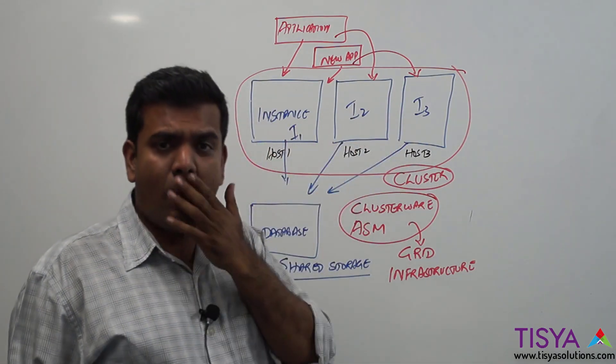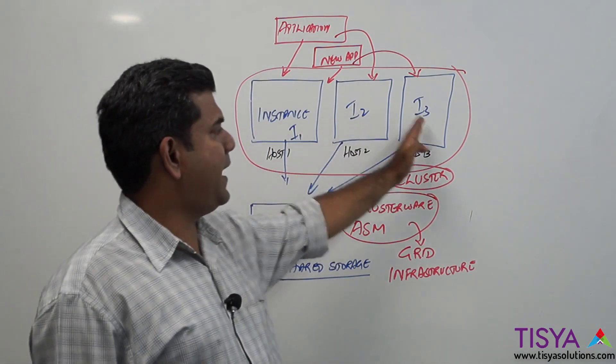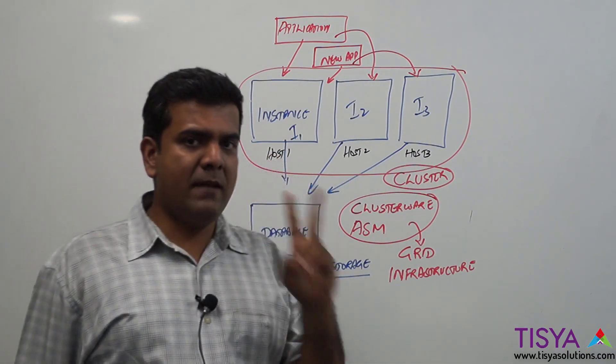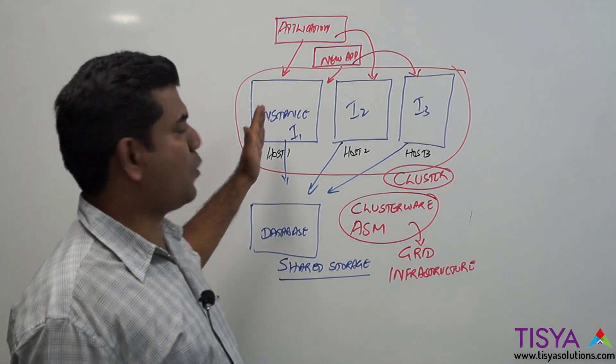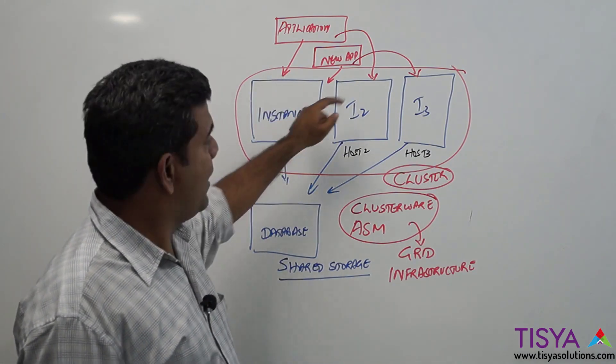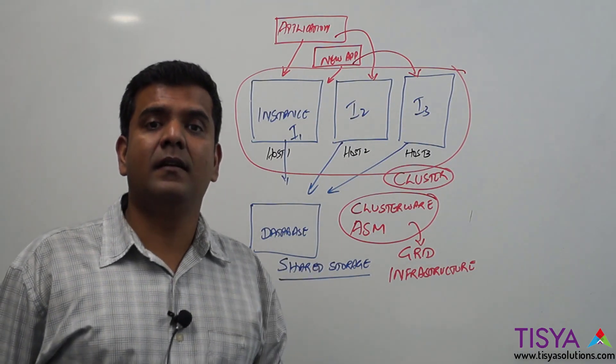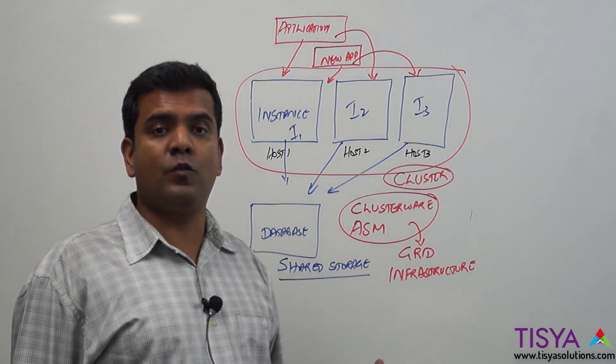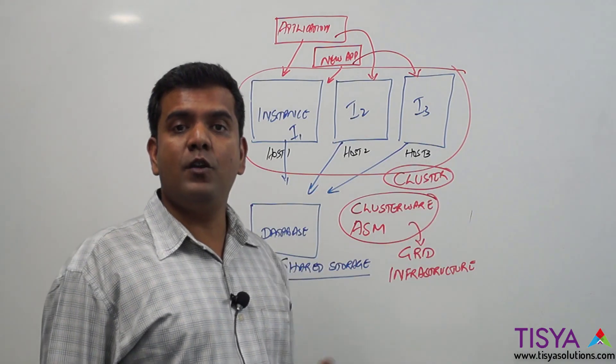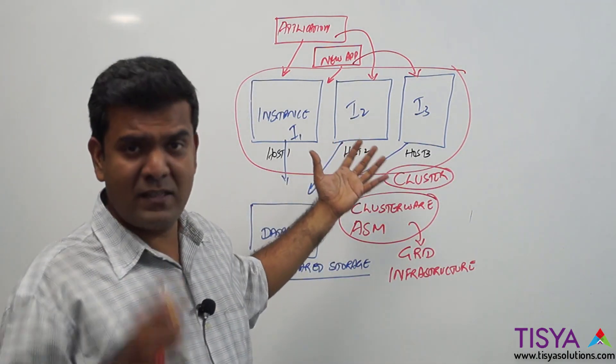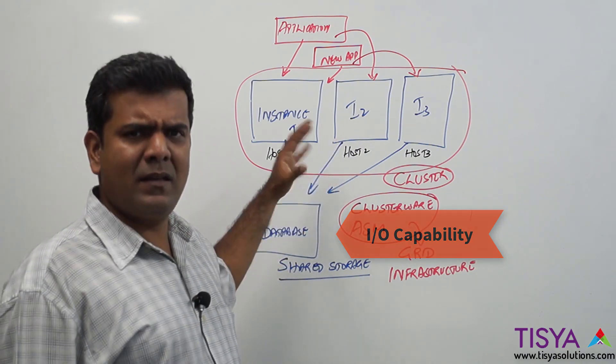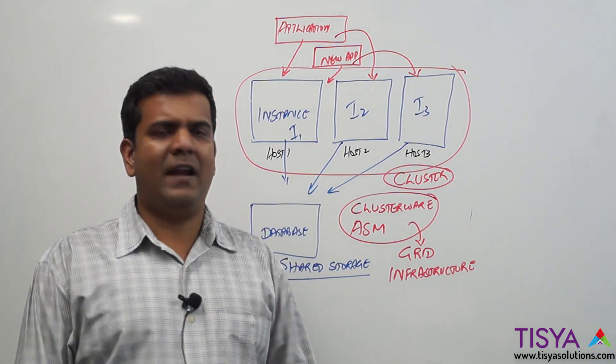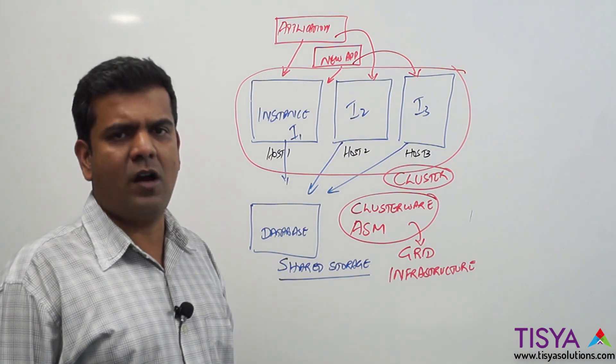So this is a quick summary about what is RAC: the ability to create multiple instances from different hosts, and they all connect to the same database. This provides two main benefits. Number one, the ability to provide high availability—even if one instance goes down, I have other instances through which my applications can connect and work. Secondly, scalability. Now with three instances, I have the CPU power and memory resources of multiple instances which can be used to do more work. Obviously keep in mind, I need to have more I/O capability to read and write, but that's anyway assumed. That's a quick overview about RAC, and we will have a separate video where we will talk about how this is configured and how it is going to work.